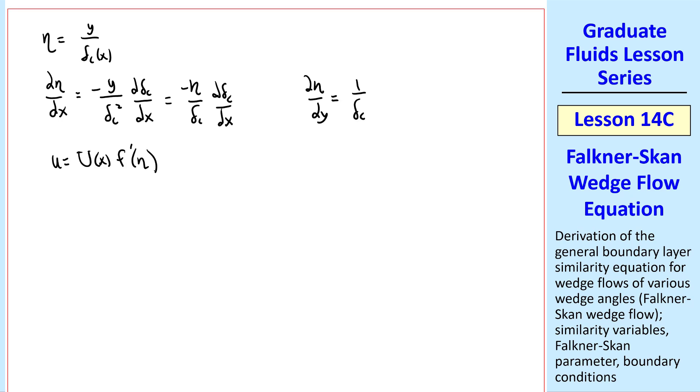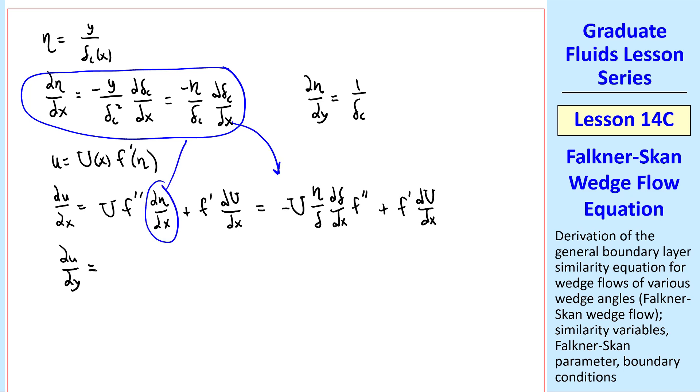Since u is capital U times f prime, we differentiate by parts. And using this expression for del eta del x, we get this expression. Del u del y is a lot simpler. It's just U f double prime 1 over delta c. We can differentiate again and get an f triple prime term.